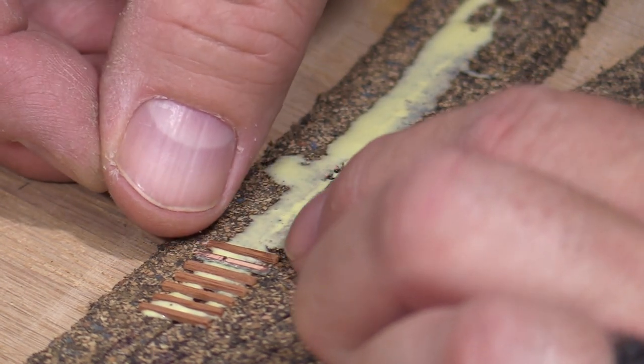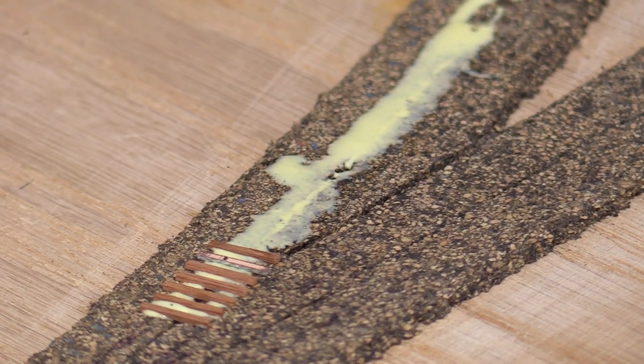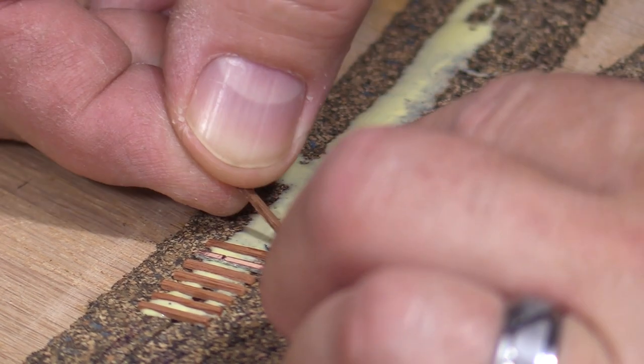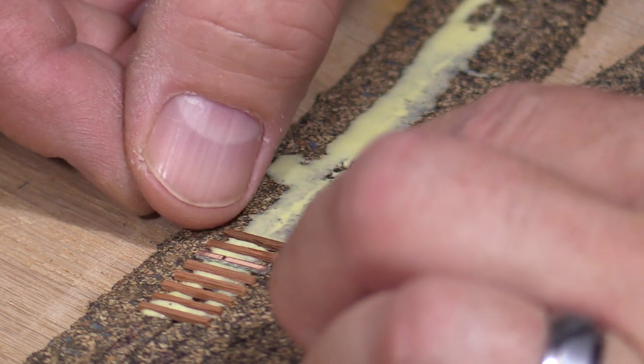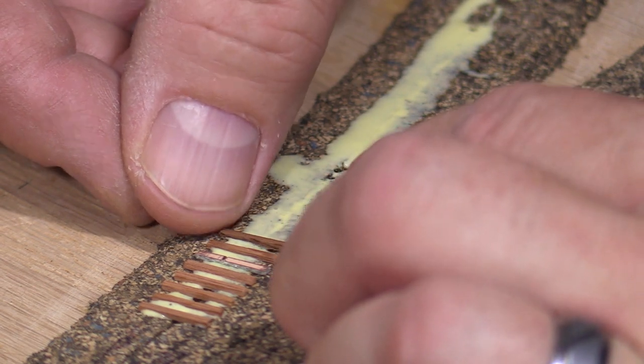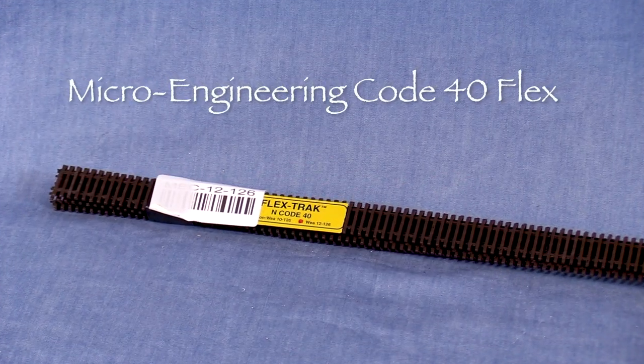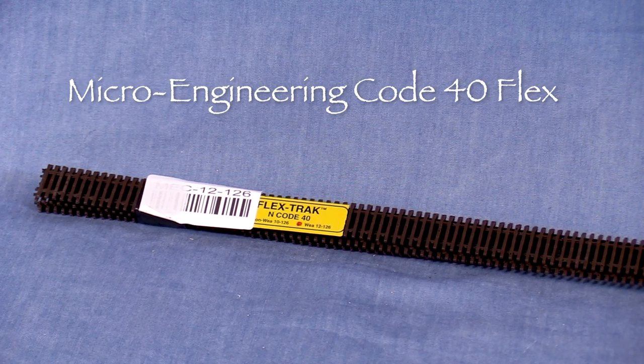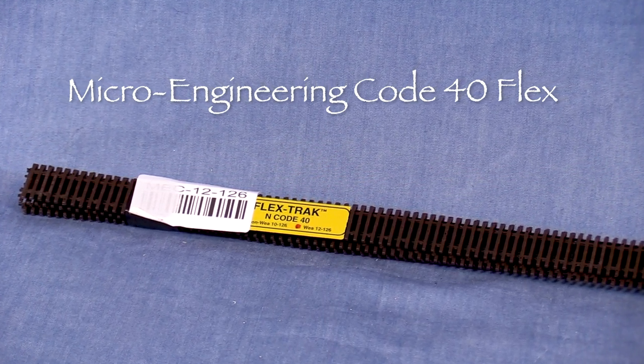In HO, I would probably use spikes, but even the smallest micro spikes that I know of are oversized for N-scale. Spikes with Code 40 rail can also cause some flanges to bounce over the spikes.